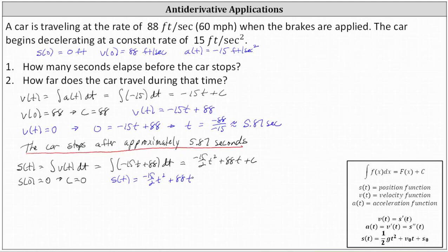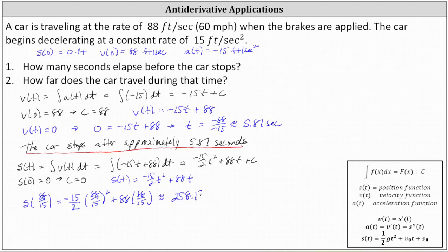Now we can use the position function to determine how far the car travels during that time — during the 5.87 seconds, or the exact time of 88 divided by 15 seconds. For a more accurate distance, we evaluate s of 88 fifteenths, which equals negative 15 halves times the square of 88 fifteenths plus 88 times 88 fifteenths, which works out to approximately 258.13 feet. So the car travels approximately 258.13 feet before stopping.